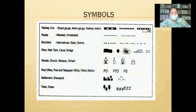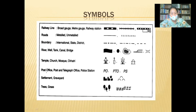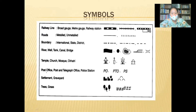Next, symbols. To make it easier to show features and places on a map, certain standard symbols are used. A symbol is a sign or shape that is used to represent something, as shown on the screen.